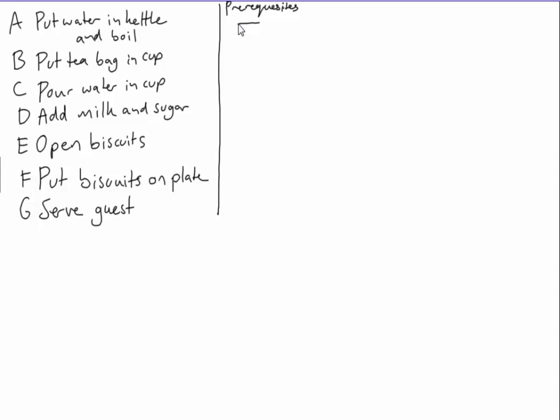Now, step A doesn't have any prerequisites because it is just the first thing we're going to do. Putting the teabag in the cup, that doesn't have any prerequisites either. Pouring water in the cup, now putting the water in the cup, normally you would put it on top of the teabag, so the teabag's got to be in the cup, and you've got to have boiled the kettle. So A and B would both be prerequisites for pouring the water in the cup.